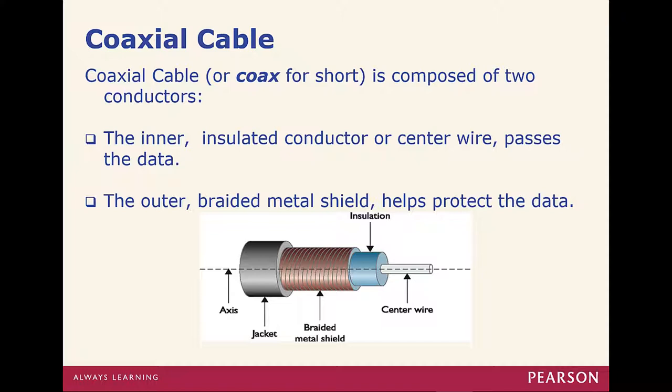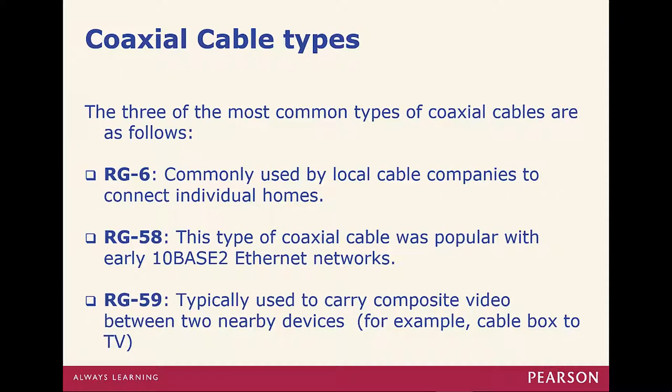Coax has a solid copper core, then some type of cladding or insulation, then a braided mesh — sometimes copper, sometimes foil, sometimes something else — and then some type of outer protective jacket. This allows the sending of electrical impulses through this one wire at specific frequencies. In coax, we're looking at three major types: RG6, which is normally used by cable companies to connect individual homes; RG58, which is the type for thinnet Ethernet; and RG59, which is typically used to carry composite video between two nearby devices, for example a cable box and TV.